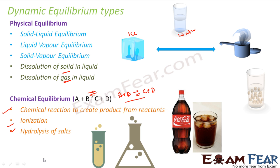Let me repeat once again because this is the basic structure of the chapter. Solid-liquid equilibrium: ice is in equilibrium with water. Liquid-vapor equilibrium: water vapor and water are in equilibrium. Solid-vapor equilibrium: for sublimating substances. Dissolution of solid in liquid: sodium chloride or sugar dissolved in water. Dissolution of gas in liquid: like Coke or soda, which has bubbles — gases dissolved in liquid. And then we have chemical reactions.